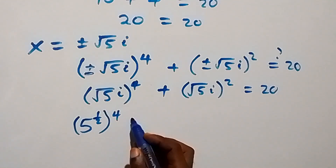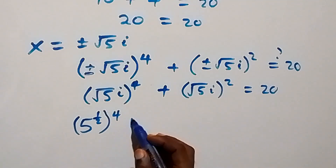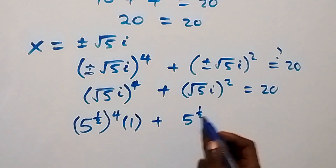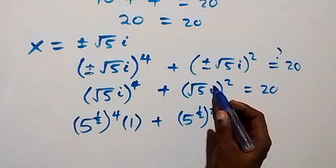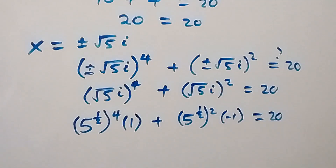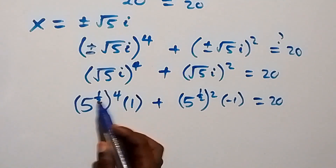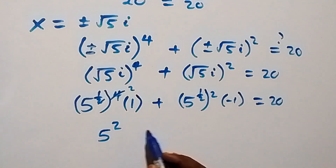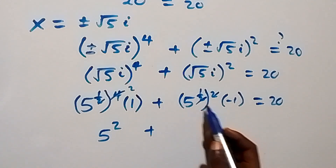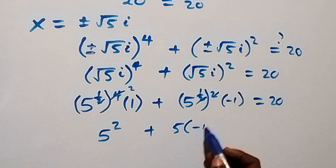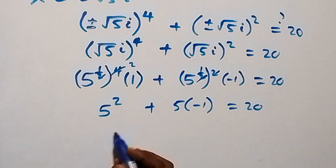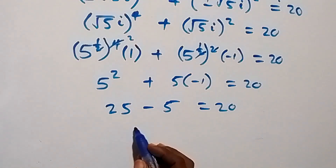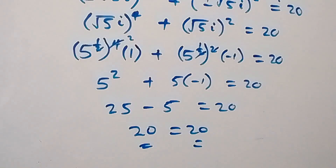Since i squared equals minus 1, i raised to power 4 equals 1. For the second term, root 5 squared times i squared: the powers multiply by the law of indices giving 5 squared times 1, that's 25. For the second term, 5 raised to the power of 1 times i squared gives 5 times minus 1, that's minus 5. So we have 25 plus minus 5, which is 25 minus 5 equals 20, which equals 20. This also satisfies the given problem.